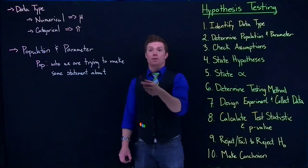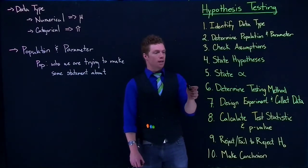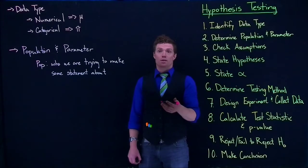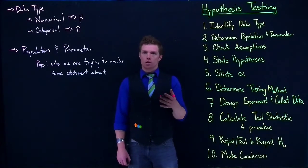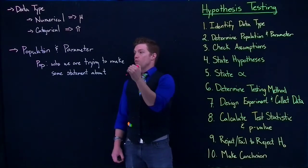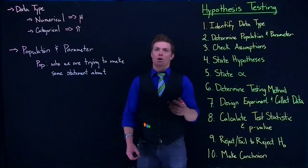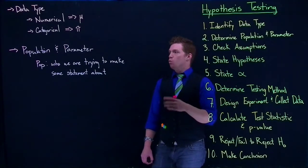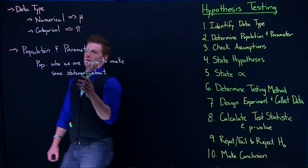When we identify who our population is, it helps us later on when we're trying to take a sample of who should be included in our sample. If we can figure out who our population is, it helps us identify who our sample is as well.